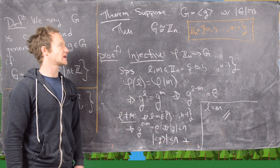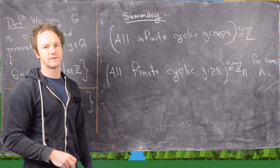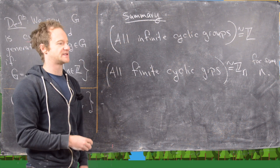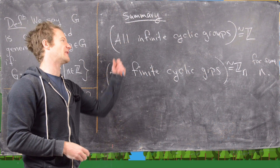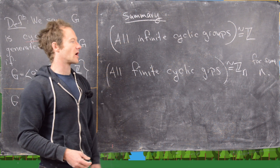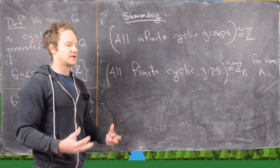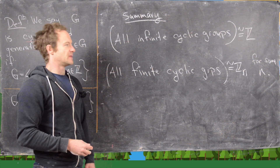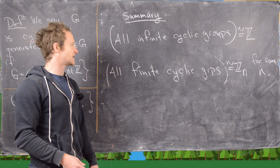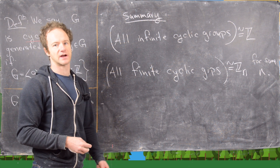As a summary: all infinite cyclic groups are isomorphic to the integers — so there is only one infinite cyclic group up to isomorphism, and that's ℤ. All finite cyclic groups are isomorphic to ℤₙ for some n — so for each natural number there is only one finite cyclic group up to isomorphism, and that is ℤₙ. This is an important classification result for cyclic groups to remember as we continue through this course.